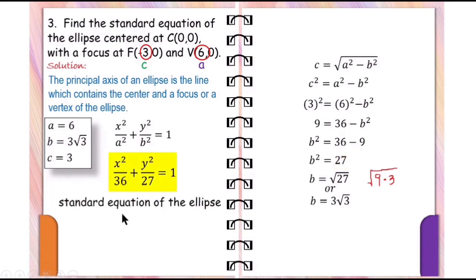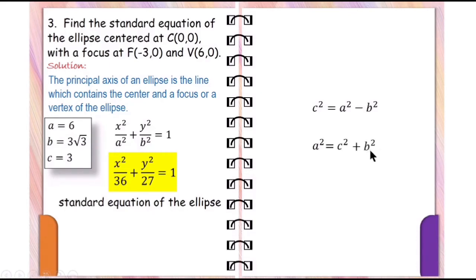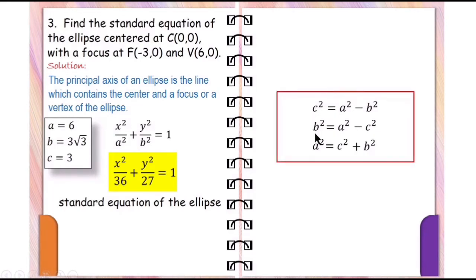Therefore, the standard equation of the ellipse is x squared over 36 plus y squared over 27 equals 1 — since a squared is 36 and b squared is 27. In general, if b is missing, we use b squared equals a squared minus c squared. If a is missing, we use a squared equals c squared plus b squared. These formulas apply when any one of a, b, or c is missing.